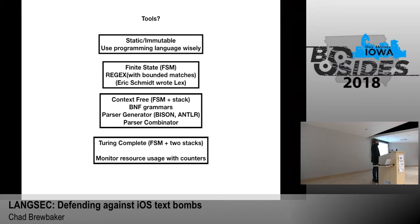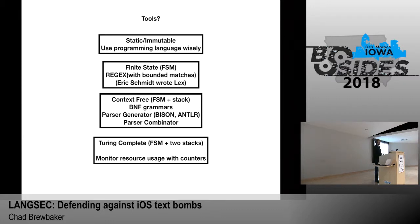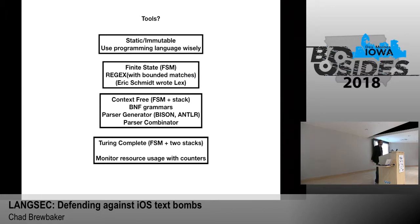For context-free grammars, you can use the Backus-Naur Form BNF notation where state A goes to B or C or D and they expand into terminals at the bottom. There are different parser generators people use, like Bison for C code or ANTLR for the Java world. There's another way that should probably be used more: parser combinators, where you build up your language using very small functions and compose them together — a function that recognizes A, a function that recognizes B, then you chain them to recognize A followed by B, creating your full context-free grammar.